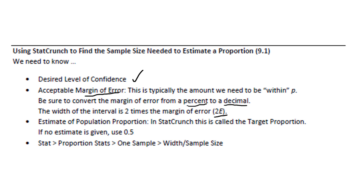The third thing we need, besides the level of confidence and the width, is some kind of estimate of the population proportion. If we're trying to estimate the population proportion and we have an estimate, we enter that for the target proportion. If no estimate is available or given, then we'll use 0.5 in that spot. To do the calculations in StatCrunch, we'll use Stat, Proportion Stats, One Sample, and then look for the link that says Width, Sample Size.